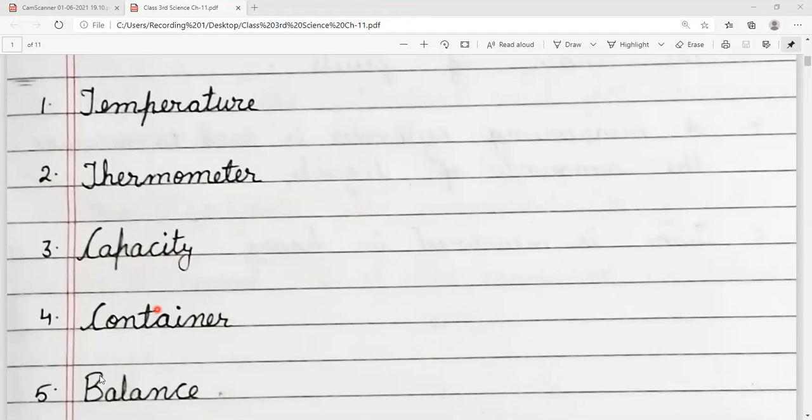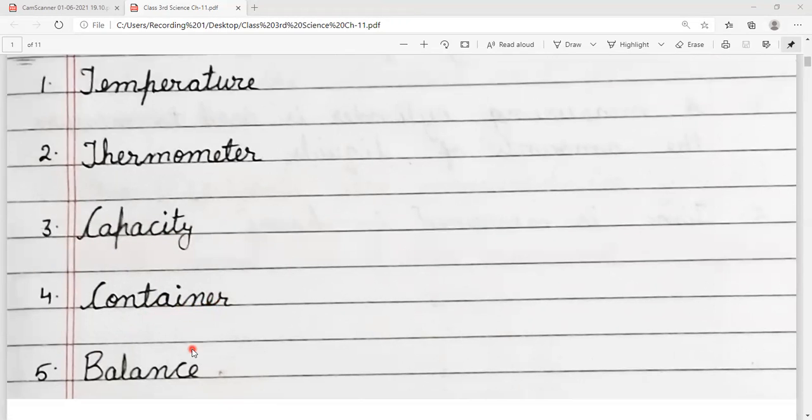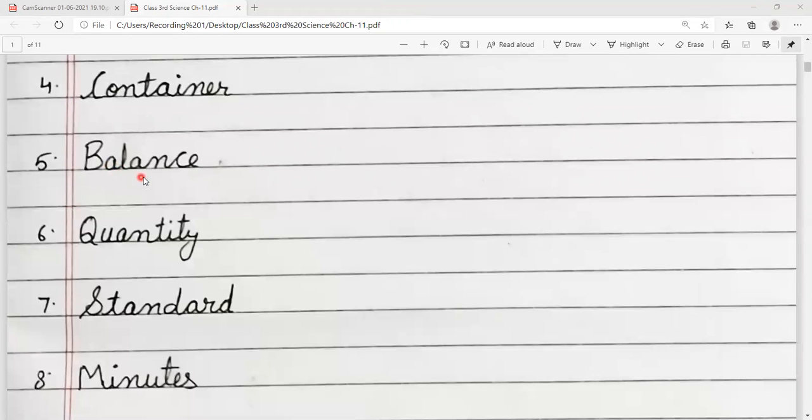Number 4, container. C-O-N-T-A-I-N-E-R. Number 5, balance. B-A-L-A-N-C-E. Number 6, quantity. Q-U-A-N-T-I-T-Y.